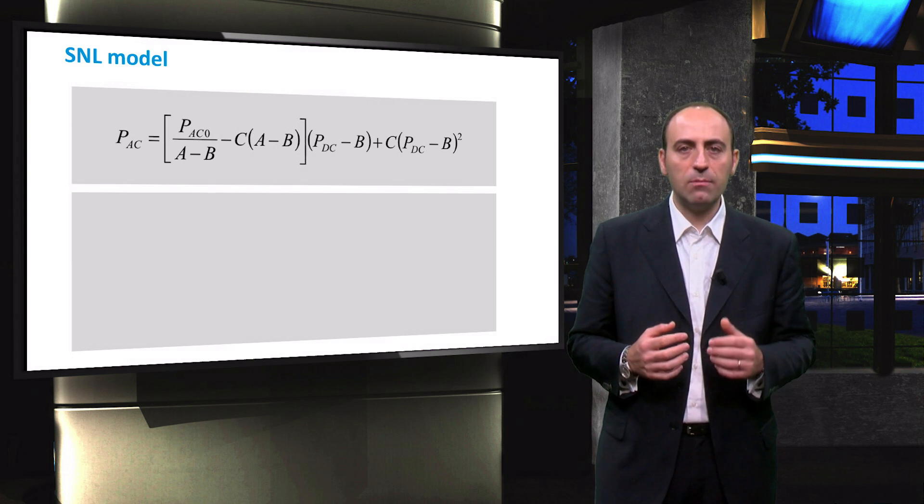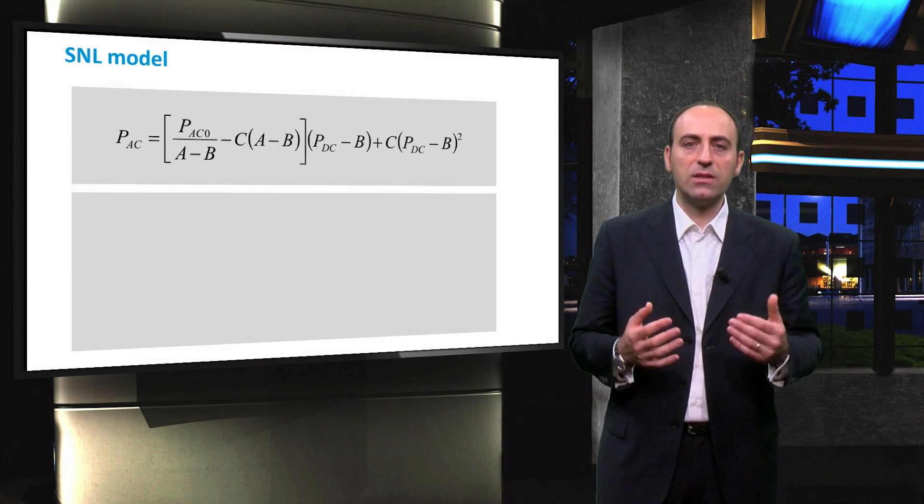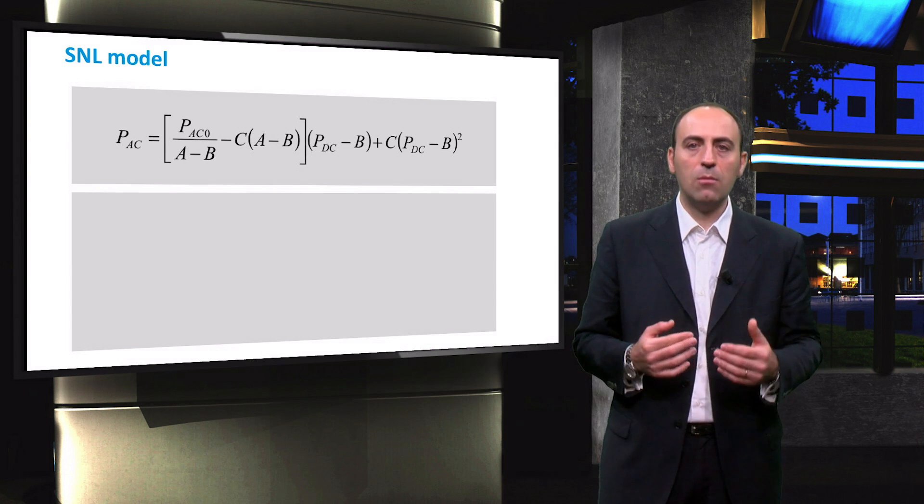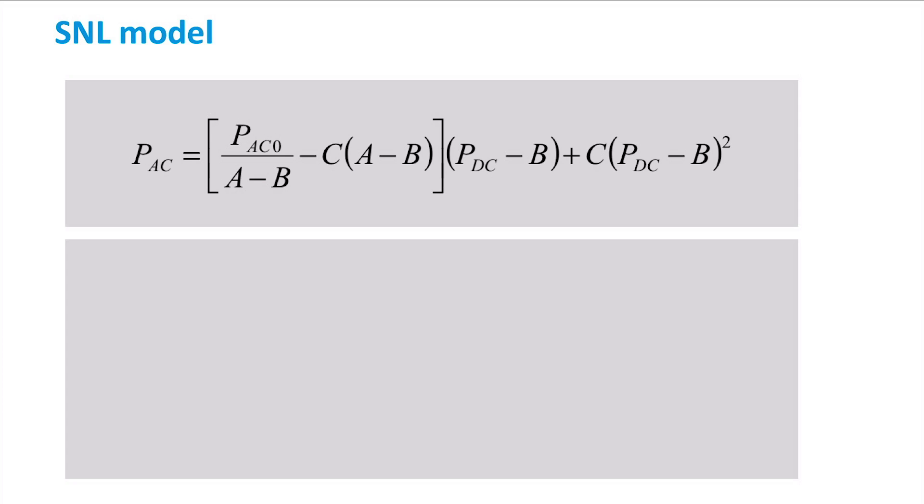The SNL model provides also some empirical formulas for the AC power output as a function of different parameters, most of them already described in the previous slides. Let's take a look at these formulas.